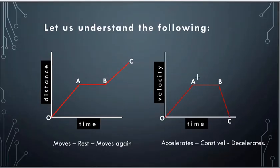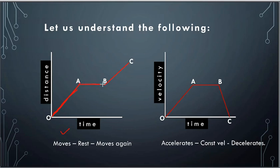Let us understand the distance-time graph. Slope is distance by time, which is speed. In the first segment, the body is moving — the line is rising. Then the horizontal segment has slope zero, meaning speed is zero, so the body is at rest. Then the body starts moving again, showing a positive speed. So this graph shows the body moving, then resting, then moving again.